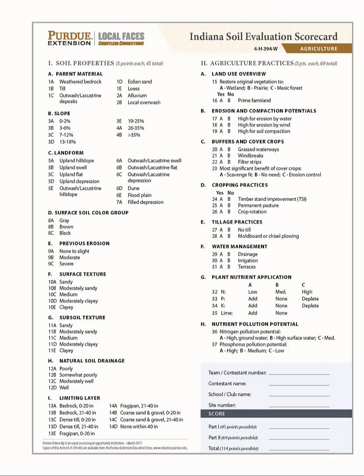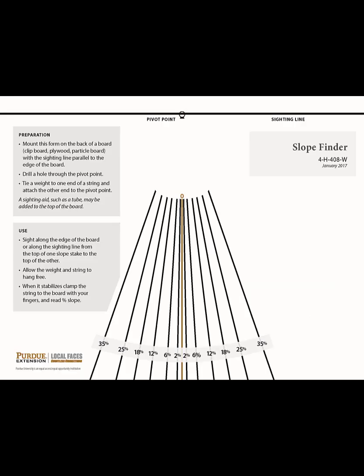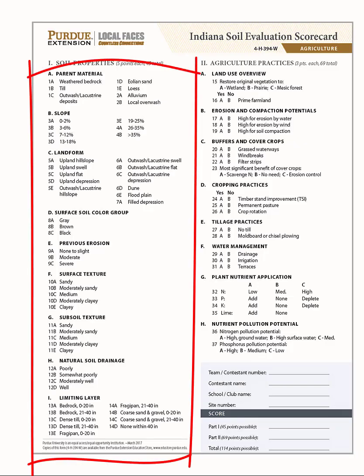You will also find the Indiana Soil Evaluation Scorecards for both Homesites and Agricultural sites, as well as the Indiana Soil Evaluation Site Information Card — an example of the card posted at each of the four sites at the contest. The last resource is the slope finder, which you print off and attach to the back of your clipboard, and by adding a string and a weight, you have a slope finding device. Now let's take a look at the left side of the Indiana Soil Evaluation Scorecard — these are the soil properties you will judge at the site, and based upon what you find on the left side, you will fill out the right side of the scorecard.